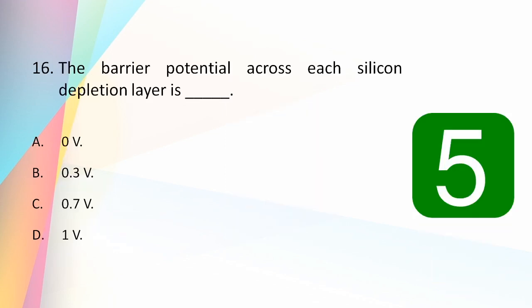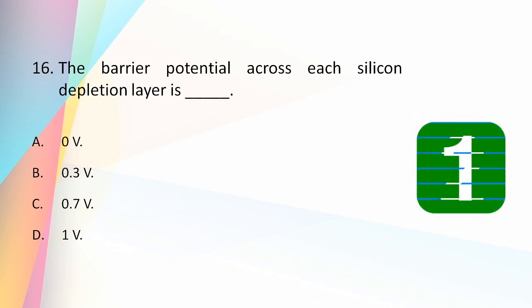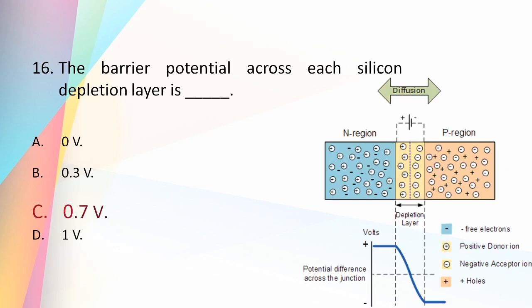The barrier potential across each silicon depletion layer is: 0.3 volts, 0.7 volts, or 1 volt? The answer is 0.7 volts. For a silicon depletion layer the barrier potential is 0.7 volts, and for a germanium depletion layer the barrier potential is 0.3 volts.